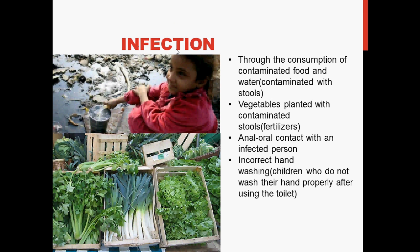Infection is through the consumption of contaminated food and water — those contaminated with stools — and vegetables planted with contaminated stools which are used as alternative fertilizers. Anal-oral contact with an infected person through sexual activities such as rimming is also possible, as is incorrect hand washing in cases where children do not wash their hands properly after using the toilet.